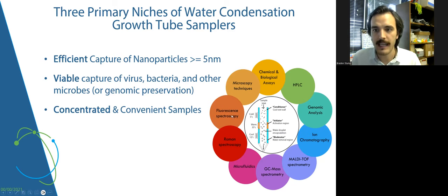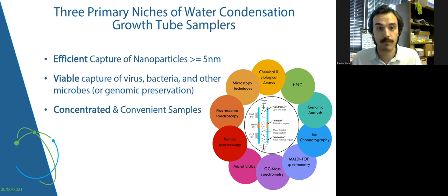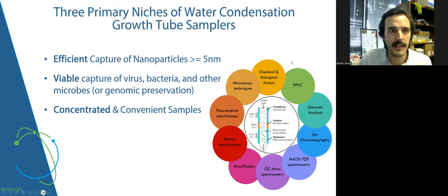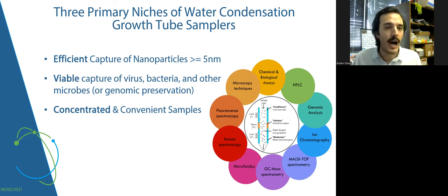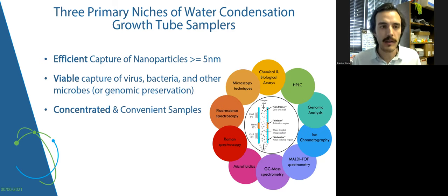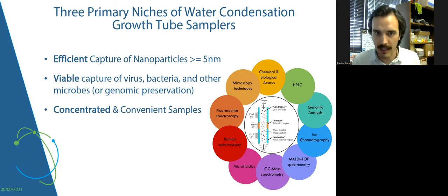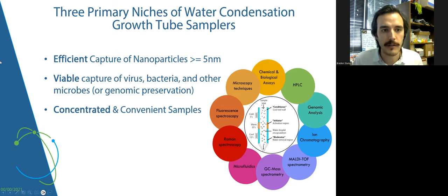For many downstream techniques, nanoparticles matter — they exist, they get deeper into your lungs, and they're harder to pick up by a lot of conventional techniques. The next of the three primary niches is specifically viable capture of virus, bacteria, and other microbes. You can also sample into genomic preservative with our technique and do genomic preservation, so DNA and RNA being retained. One of the things we like to highlight is that if you're looking to do a study that needs to know viability, it is a rare thing that a sampling technique is gentle enough to capture bioaerosols viably, retaining infectivity, retaining the ability for them to be cultured.